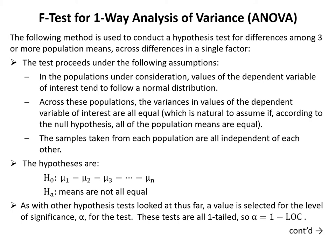The following method is used to conduct a hypothesis test for differences among three or more population means across a single factor. The test proceeds under these assumptions: values of the dependent variable follow a normal distribution in each population; the variances of the dependent variable are all equal across populations, which is natural to assume if all population means are equal under H₀; and the samples taken from each population are all independent of each other.